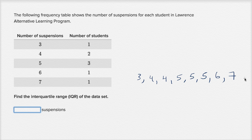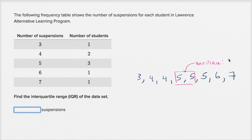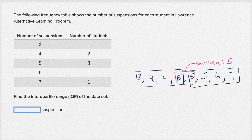The list is already in order, so I can immediately start calculating the median. I have eight numbers, so to calculate the median I look at the middle two, which are both fives. Halfway between five and five is just five, so the median is five. To find the interquartile range I need the median of the first half — the first four numbers — and the median of the second half. Since I had two middle numbers, I include the left five in the left half and the right five in the right half.